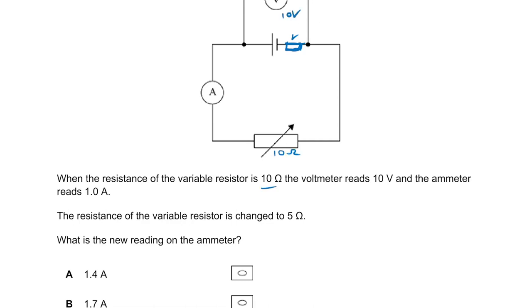The ammeter reads one amp. The resistance of the variable resistor is changed to five ohms, and we're being asked: what is the new reading on the ammeter? So let's figure out what's going on.